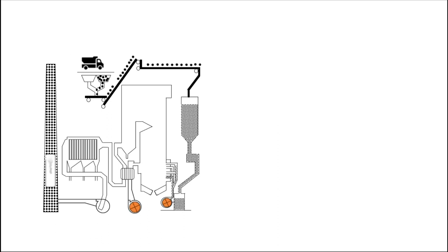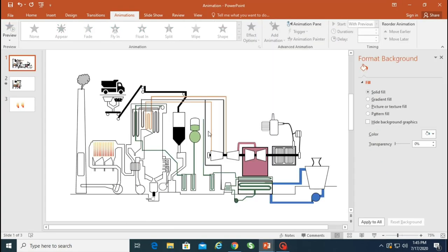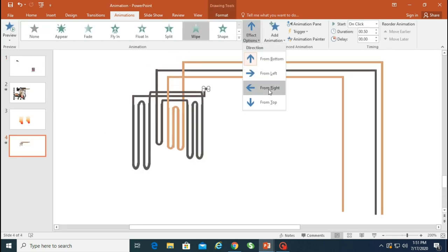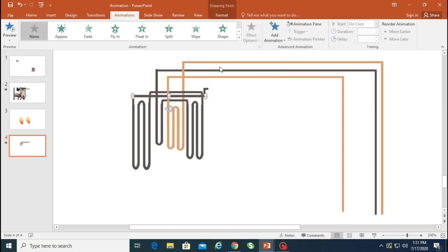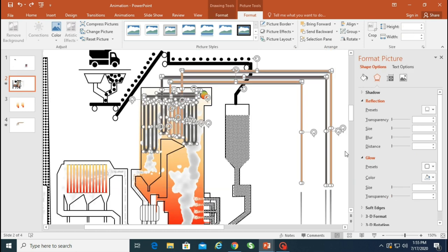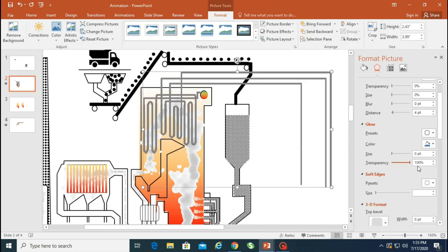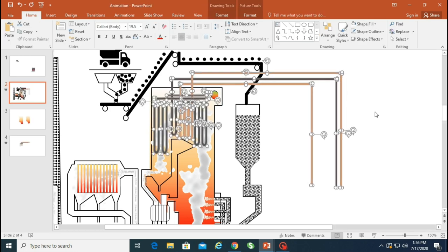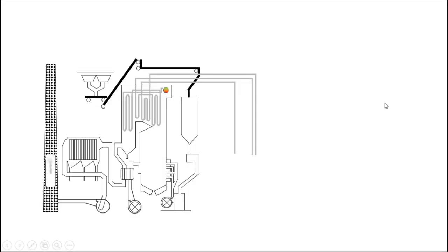I want the gradient to appear after the smoke starts. Just click on the smoke to see its animation number, then move your gradient background to the point when the first smoke line comes. So the feed comes in, the first smoke line appears, and then the gradient also starts — that's the reasoning behind the animation timing. For the pipelines, again use wipe animation: left to right, bottom to top, whatever matches your flow direction.